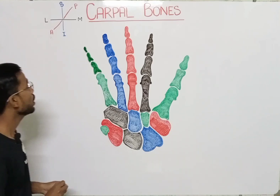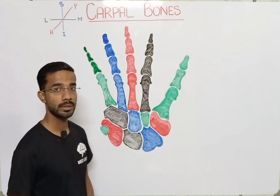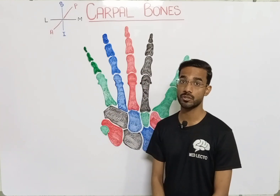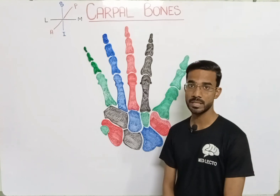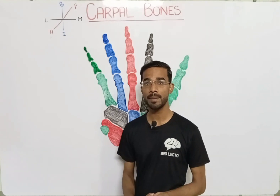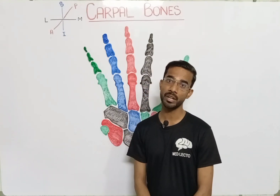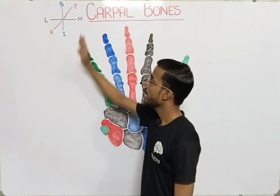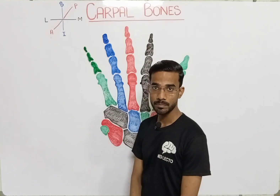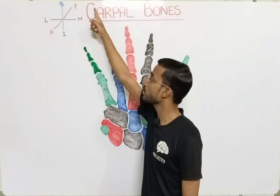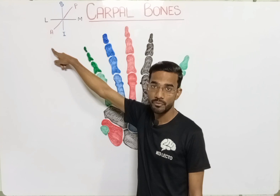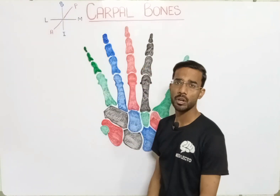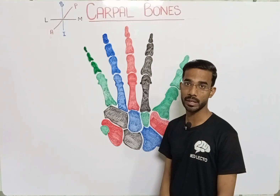Before we start, you should know the basic orientation map — this is most important when you are studying anatomy. I would suggest you make this map and put it on the table where you study. The key terms are: medial, lateral, posterior, anterior, dorsal, ventral, superior, and inferior. These are basic terminologies that should be on your fingertips.